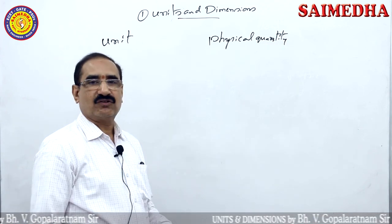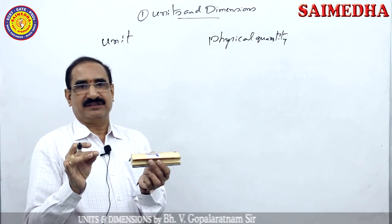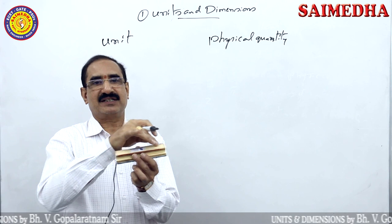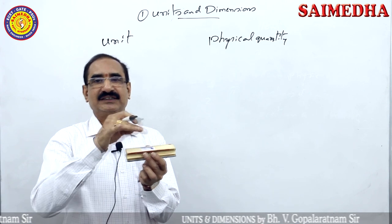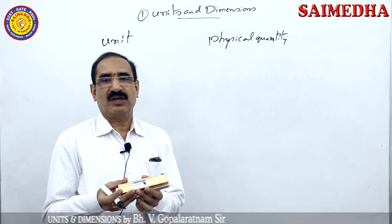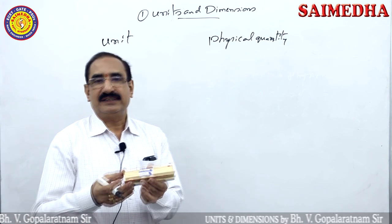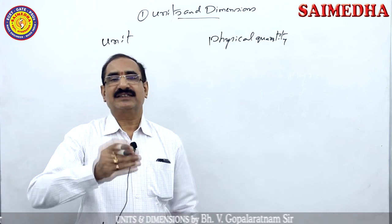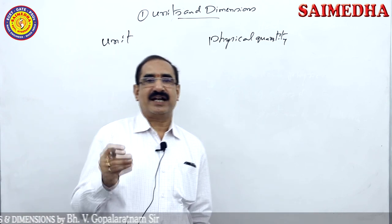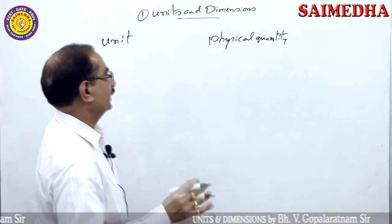Now to measure a physical quantity like length, we want a standard. That standard is called a unit. We will measure the length in centimetres — centimetre is a standard. We will measure the mass in grams — that is a standard. So that standard is called a unit. A unit is a standard to measure any physical quantity.